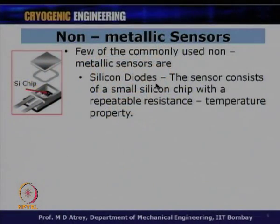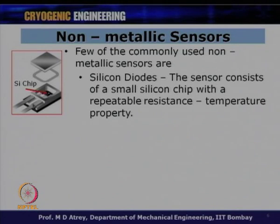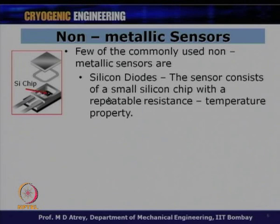Commonly used non-metallic sensors include silicon diodes. The sensor consists of a small silicon chip with a repeatable resistance-temperature property. Typically a silicon diode has two wires coming out of a small casing in which the silicon chip is sealed. This is what will predominantly be used.